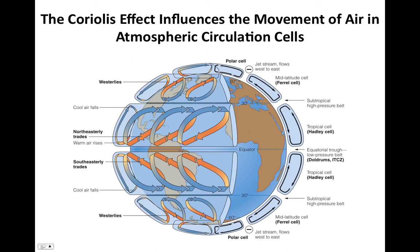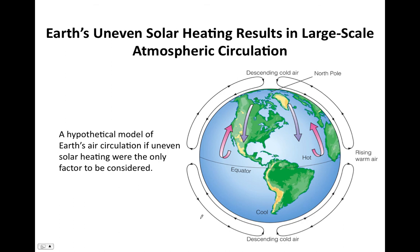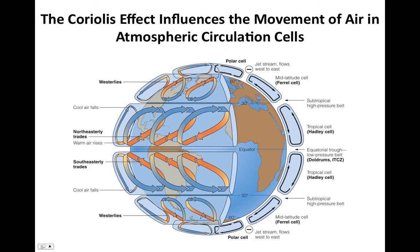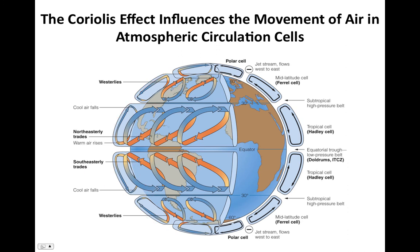Returning to the simplified model of atmospheric circulation — adding the Coriolis effect and other complexities, we get a generalized model of atmospheric circulation. Instead of just one convection cell per hemisphere, we actually have three in the northern hemisphere and three mirrored in the southern hemisphere — six total. When air moves within those convection cells, its path is deflected: in the northern hemisphere air is deflected to the right, and in the southern hemisphere to the left, dictating wind direction.